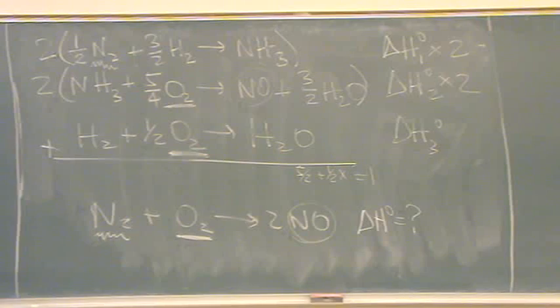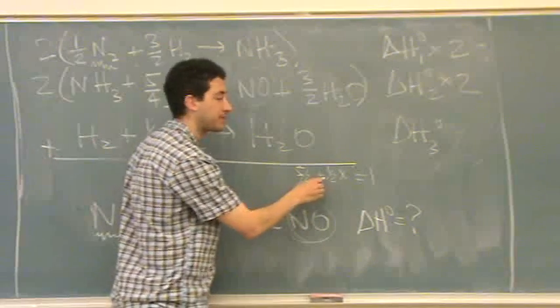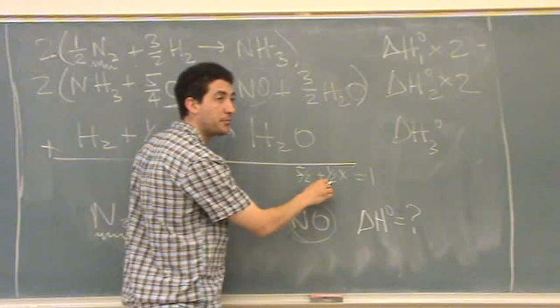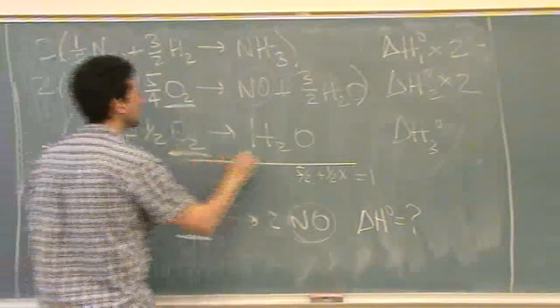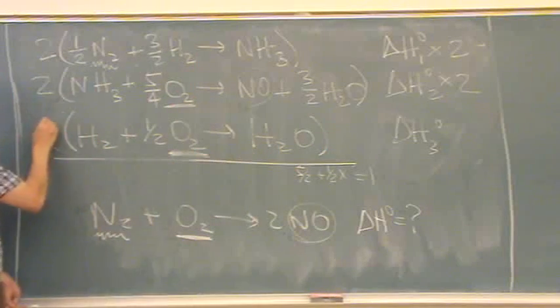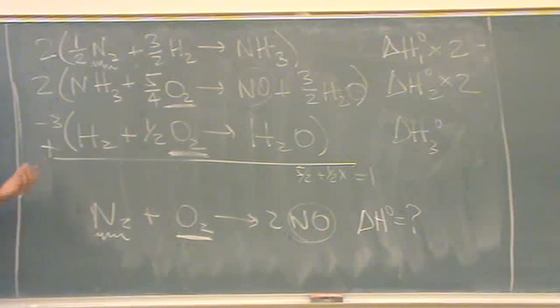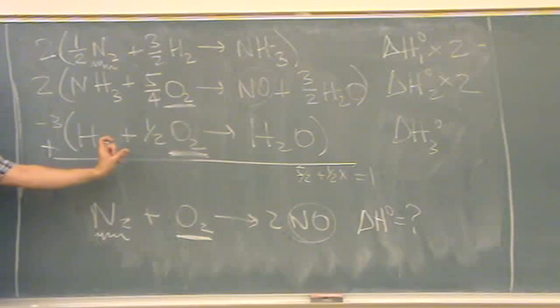Negative 3. Negative 3. Is that okay? X is minus 3. Is there any questions on that? 5 halves minus 3 halves. So, 2.5 minus 1.5 is 1. So, I've actually got to multiply this by minus 3. I'm actually flipping it and multiplying by 3 is what we're doing.